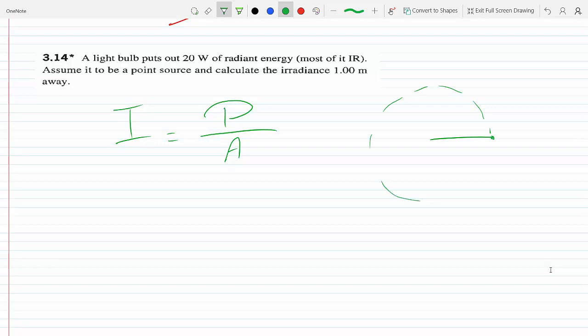Radiating it in a sphere format, so this is 1 meter away. The area of a sphere is 4πr², and if it's 1 meter, the area is just 4π times 1 squared, which is 4π.